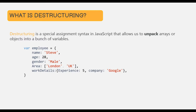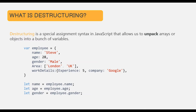Here we have a very simple employee object, and this employee object has name, age, gender, area, and work detail properties. Now, if we want to assign the value of these properties to a variable, we will have to access these properties on the employee object and then assign them to a variable. We can achieve this same thing using destructuring but in a simpler way. Let's see how to use the destructuring of an object.